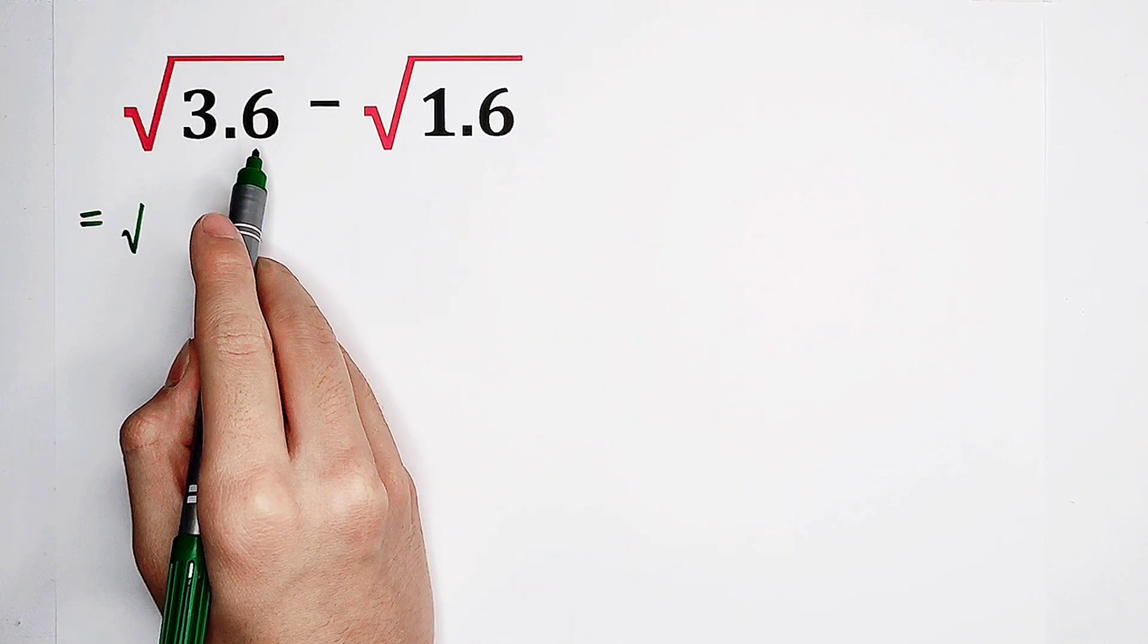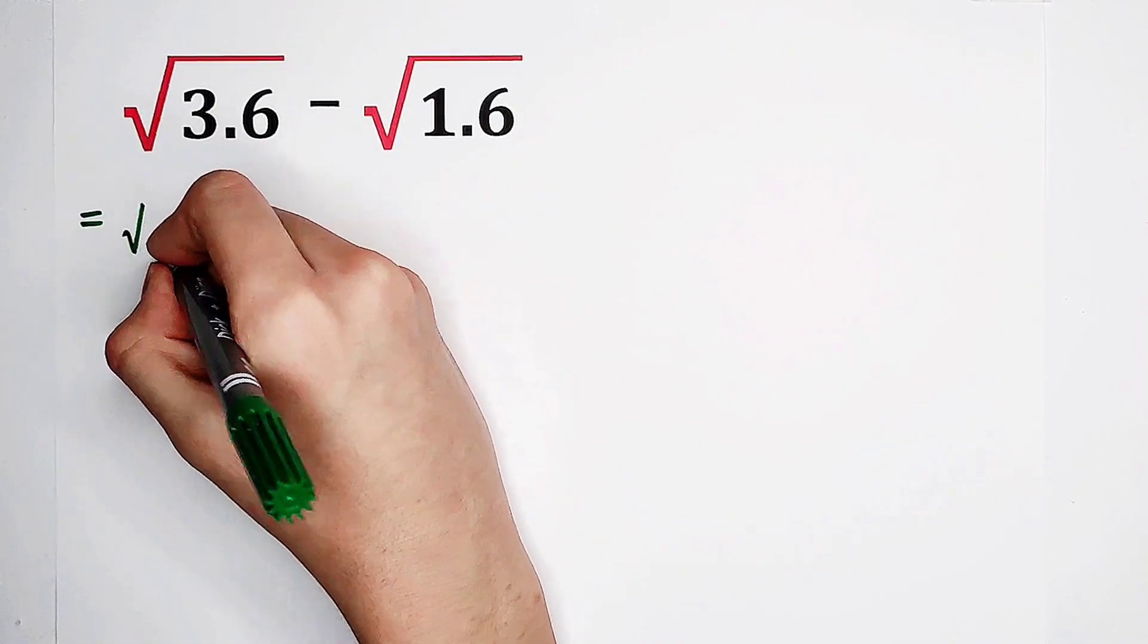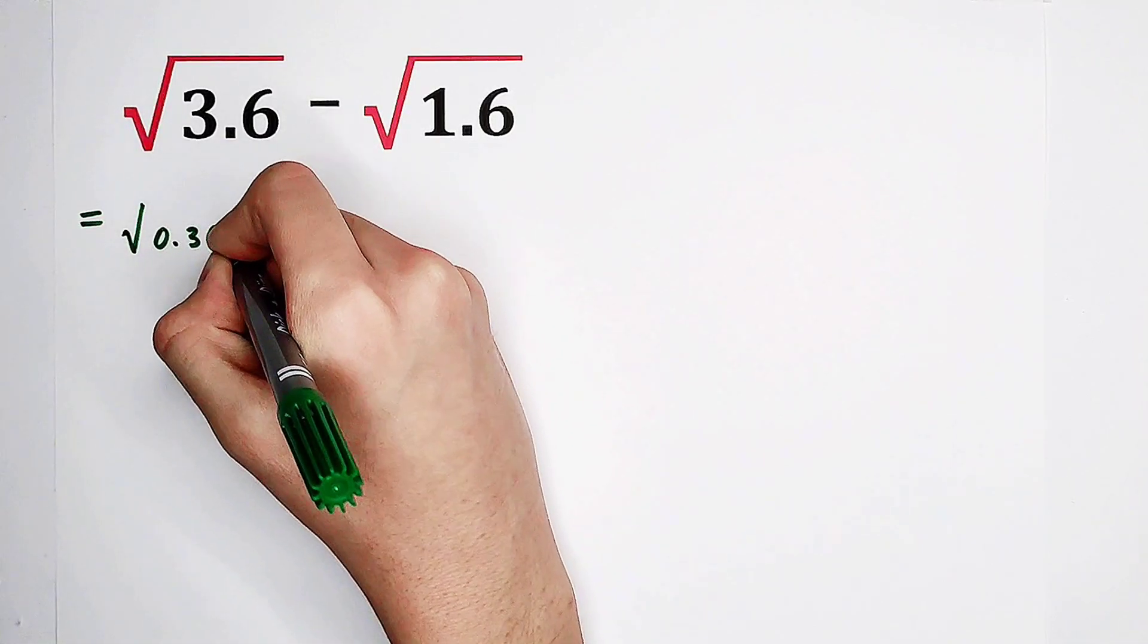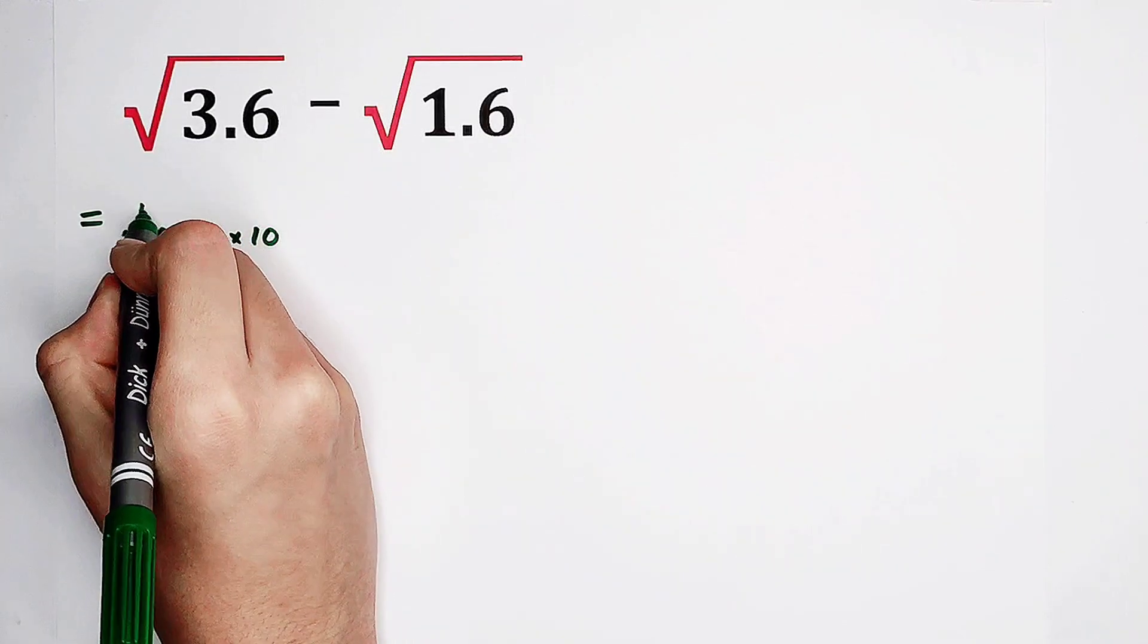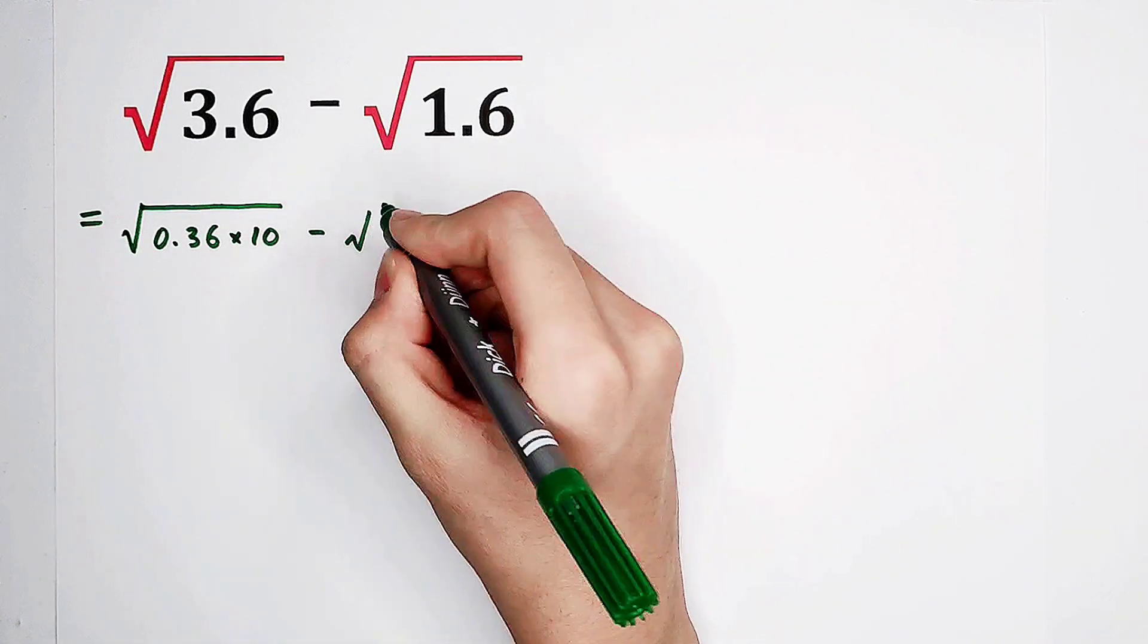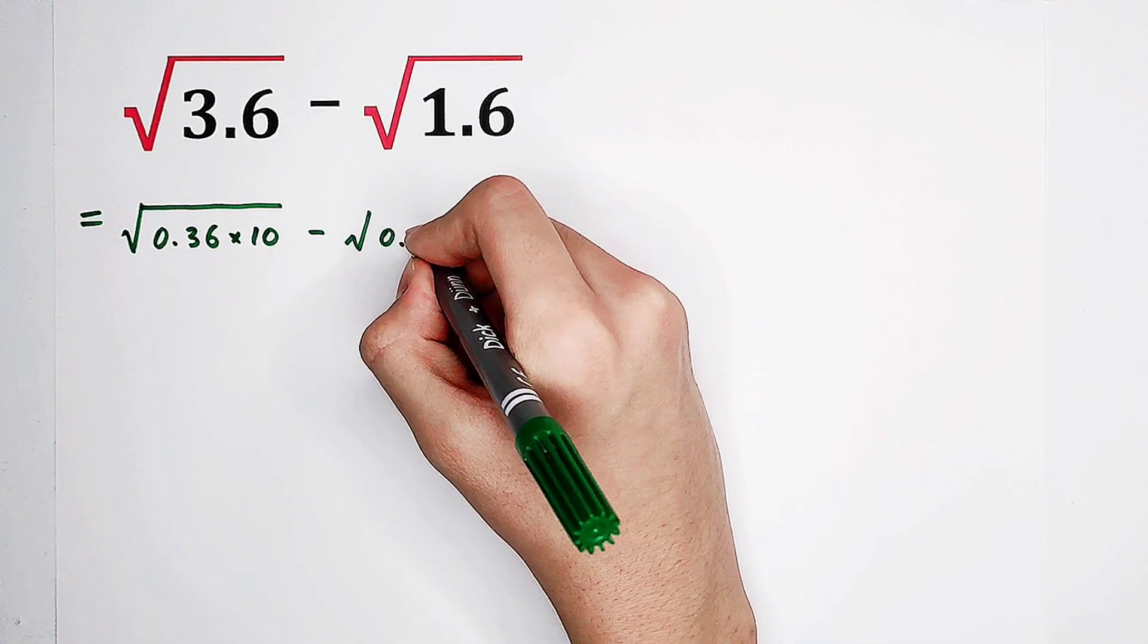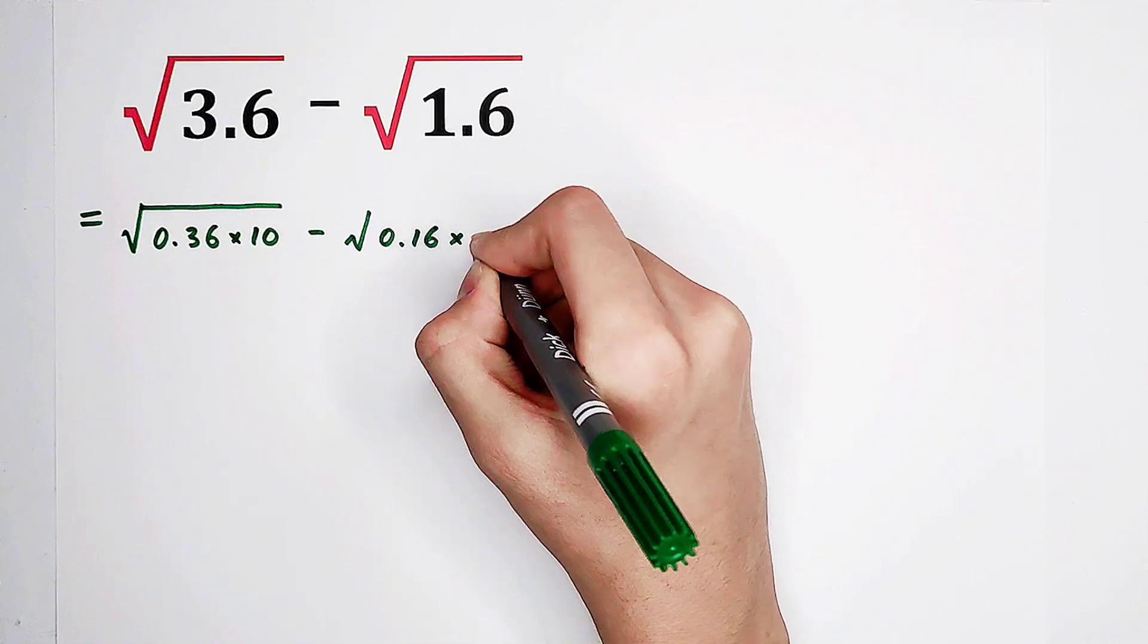3.6 is 0.36 times 10. Same way, 1.6 is 0.16 times 10.